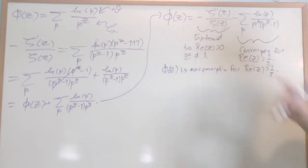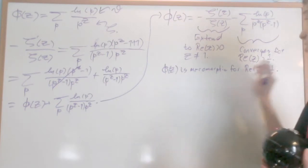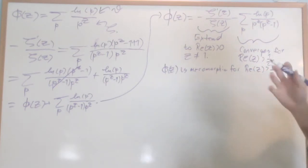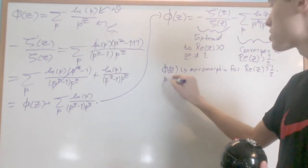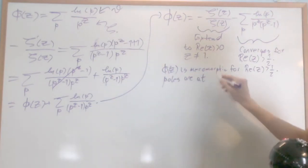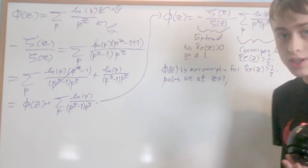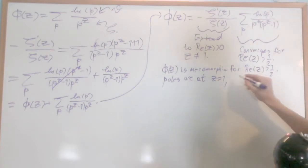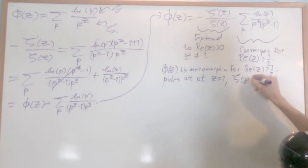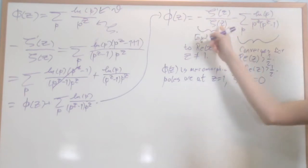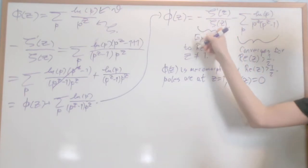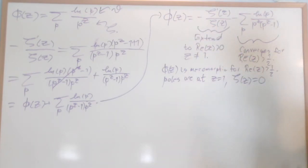So φ(z) is meromorphic for real part of z bigger than a half — that's your homework to verify convergence. Meromorphic just means holomorphic except for a bunch of poles. The poles are at z equals 1, because that's a pole of the zeta function, and when ζ(z) equals 0, because then I have a zero in the denominator. Those are the poles.